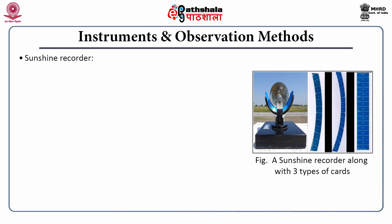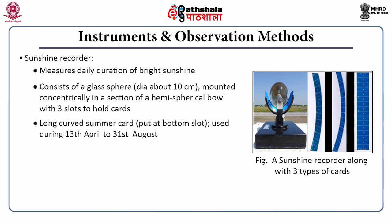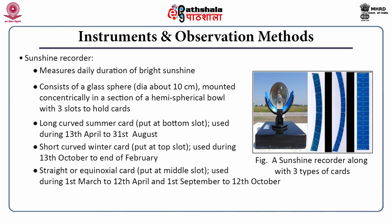Next equipment is the Sunshine Recorder, which measures the daily duration of bright sunshine. It consists of a glass sphere about 10 centimeters in diameter, mounted concentrically in a section of a hemispherical bowl with three slots for three different types of card. During summer time, a long curved card is used at the bottom slot, used from 13th April to 31st August. A short curved card is used during winter time at the bottom slot, from 13th October to end of February. The third type is the straight or equinoctial card, placed at the middle slot, used from 1st March to 12th April and from 1st September to 12th October. The instrument is kept at an open exposed place at 3 meters height.